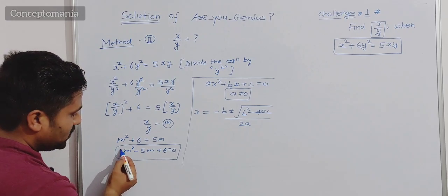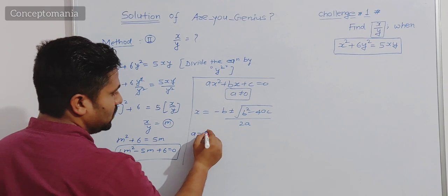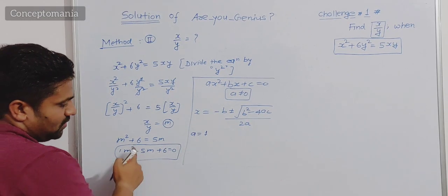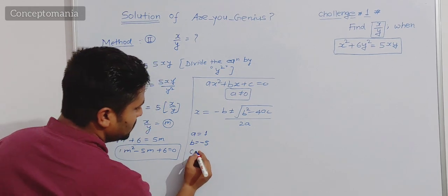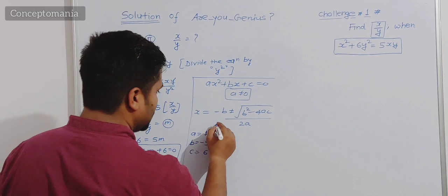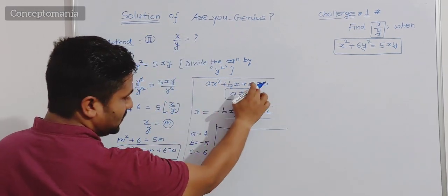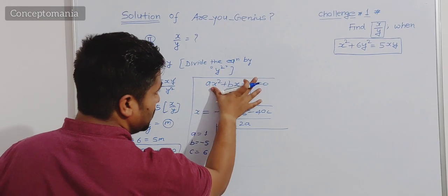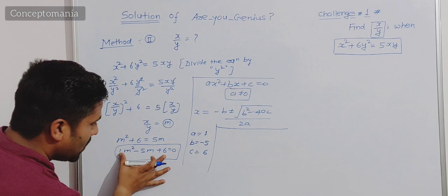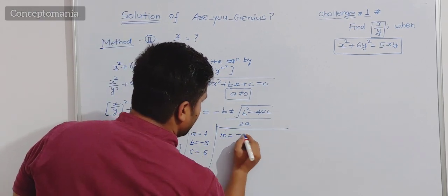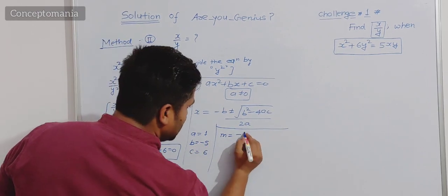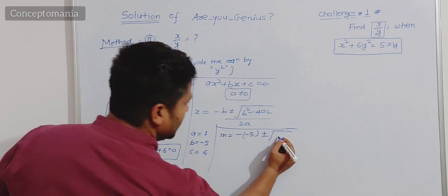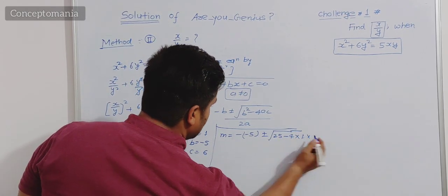For our equation m square minus 5m plus 6 equals 0, we identify: value of a is 1 (coefficient of m square), value of b is minus 5 (coefficient of m), and value of c is 6. This is a quadratic equation in m, so we find the values of m. Substituting: m equals minus b, that is minus of minus 5, plus minus root over b square (which is 25) minus 4 times a (which is 1) times c (which is 6), whole divided by 2 times 1.